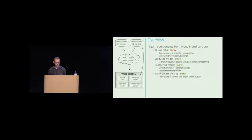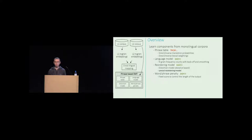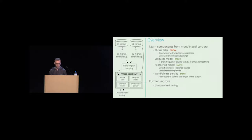To learn the phrase table from monolingual corpora, we first learn n-gram or phrase embeddings for each language independently, then map them to a shared cross-lingual space in an unsupervised manner, and finally use the resulting cross-lingual phrase embeddings to induce our phrase table. With this, we already have an initial unsupervised SMT system that works pretty well, as we'll see in the experiments. But we don't stop here — we further improve it with unsupervised tuning and iterative refinement.